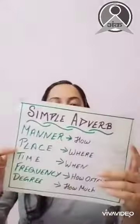Let's move on to your second type of simple adverb: adverb of place. A word that shows where the work is done. Like here, there, inside, outside, indoor, and so on. For example: 'He is sitting here.' 'You should not sit there.'